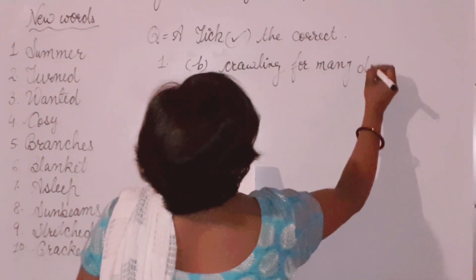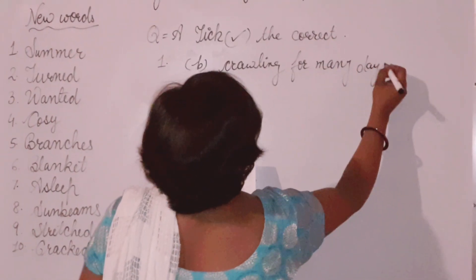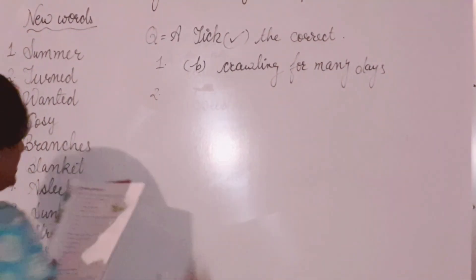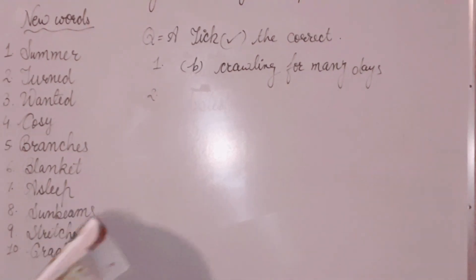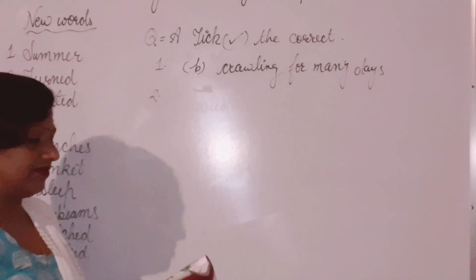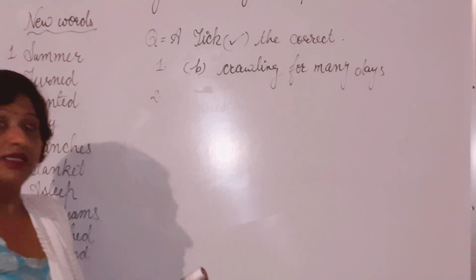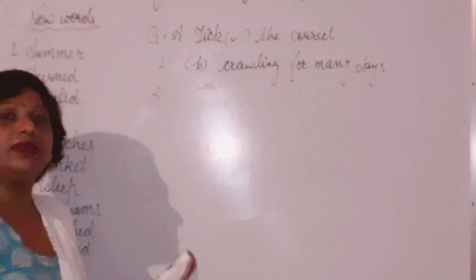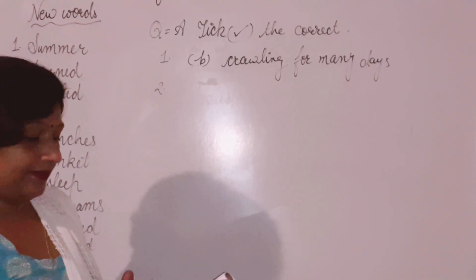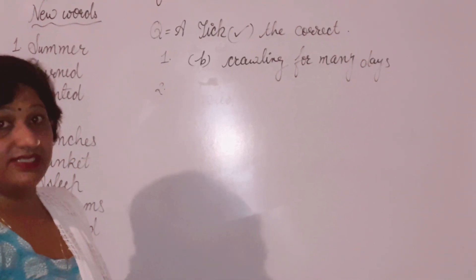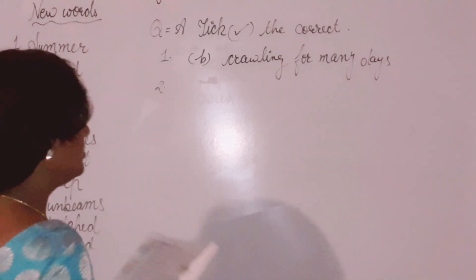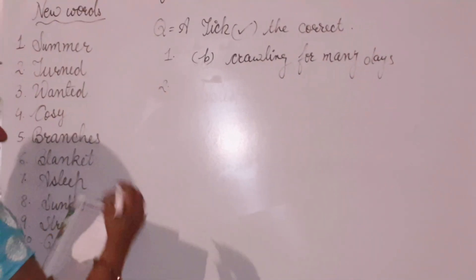The second question is: Soon it was winter, and the grapevine got covered with — rain, dust, or snow? The correct answer is option B — snow. The grapevine was covered with snow, yani baraf se dhak gayi thi.